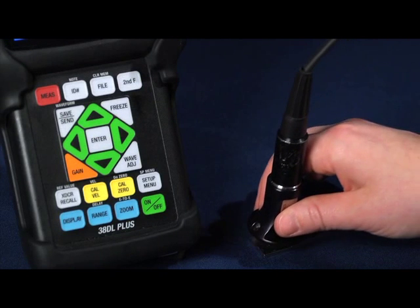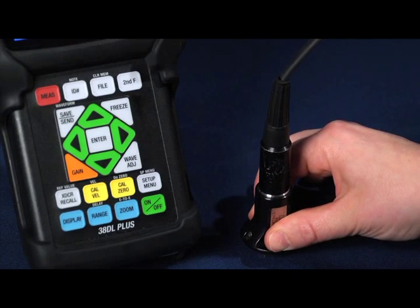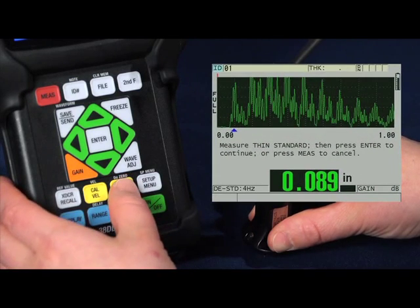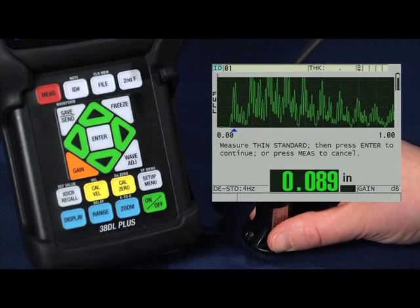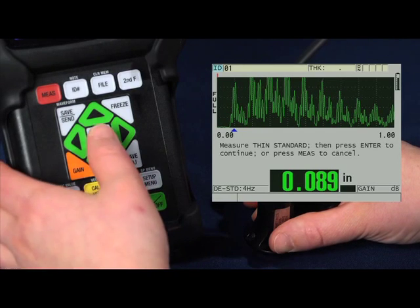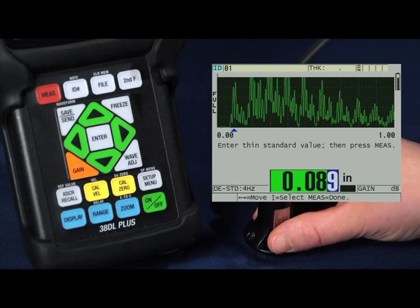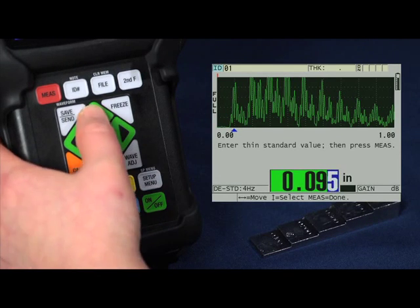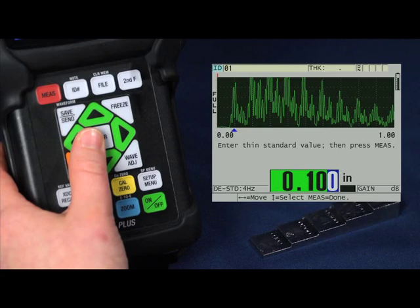Now you can proceed to your thin standard, the hundred thousandths step. Couple onto your thin standard and press the CAL0 key. Once you have a steady reading, press the ENTER key. Now again, you can use the up, down, left or right keys to enter in the known value of the thickness standard.